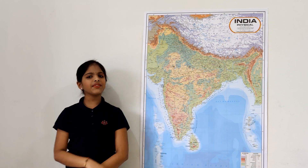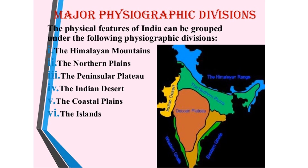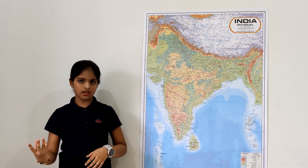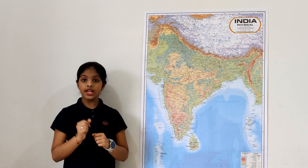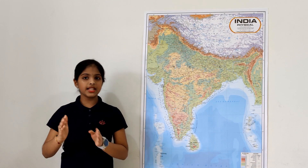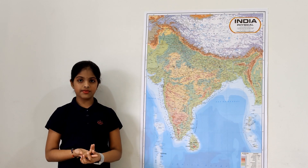But how have these physical features been formed? We find different types of rocks. Some are very hard like marble, and some are very soft like soapstone. The colour of the soil varies from one place to another because soil is formed out of different types of rocks.